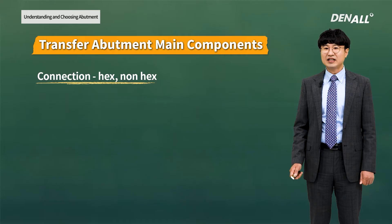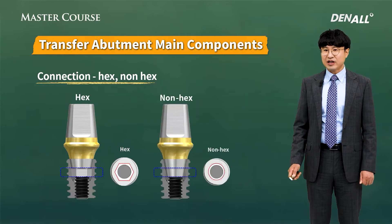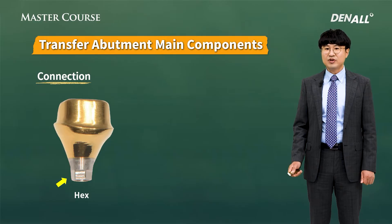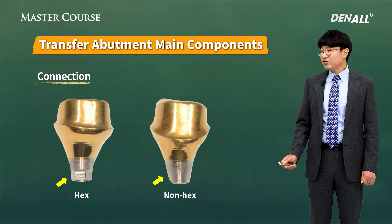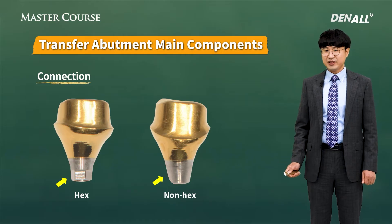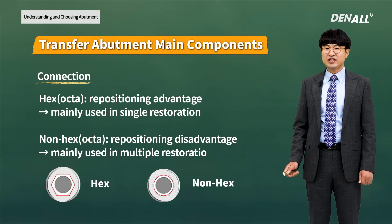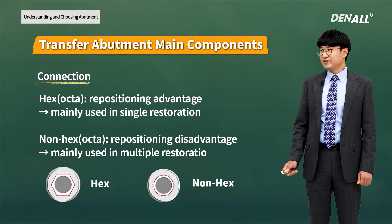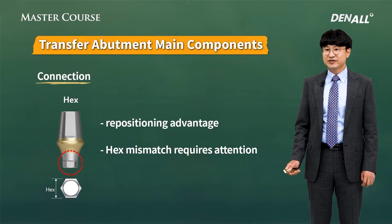Next, we need to consider connections. Connections can be divided into the hex type and the non-hex type. As you can see, the hex type has the shape of a hexagon. On the right-hand side, the non-hex type is not shaped like a hexagon. The biggest advantage of the hex type is that it can be repositioned, and it is mainly used in single-tooth restoration.